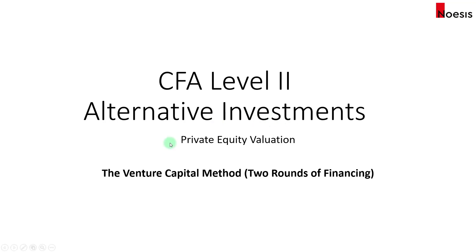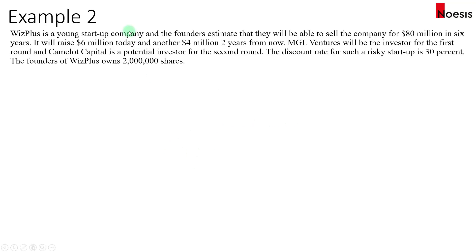Now for two rounds of financing, the example will look like this. Again we will start with Whiz Plus — a young startup company. The founders estimate to sell the company for eighty million dollars in six years' time, but this time they only plan to raise six million dollars today and the other four million dollars is to be raised two years from now. MGL Ventures will be the investor for the first round and Camelot Capital will be a potential investor for the second round. The discount rate for this risky setup will be thirty percent and the founders of Whiz Plus own two million shares.